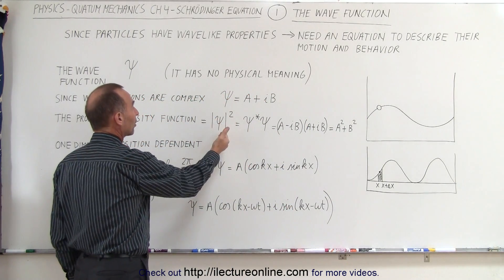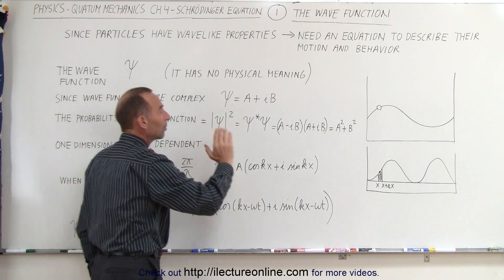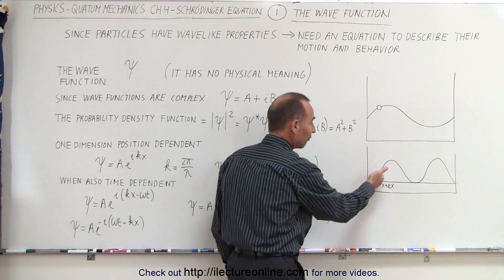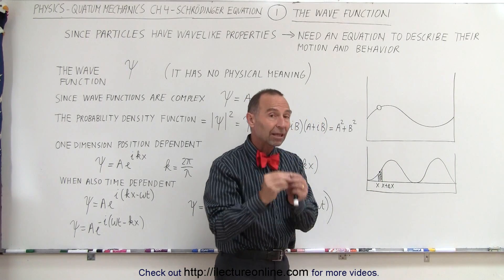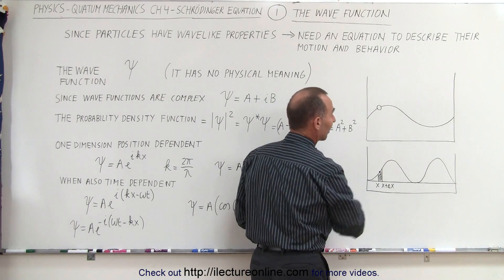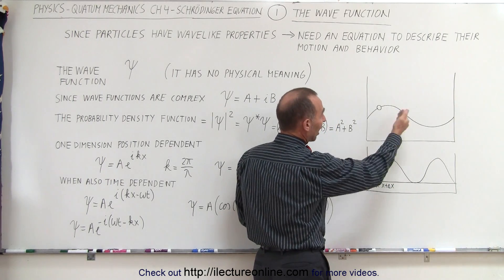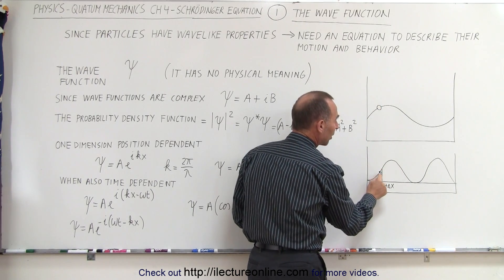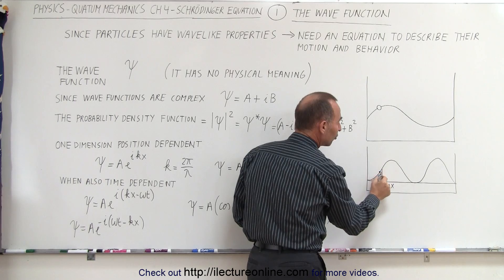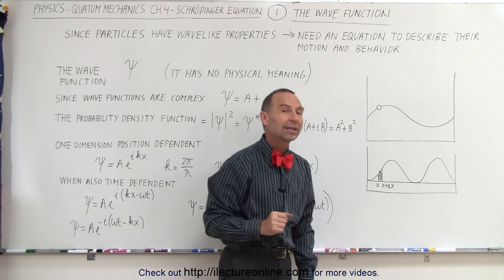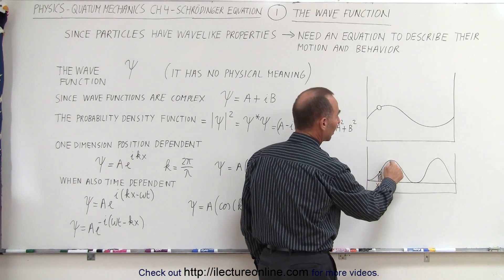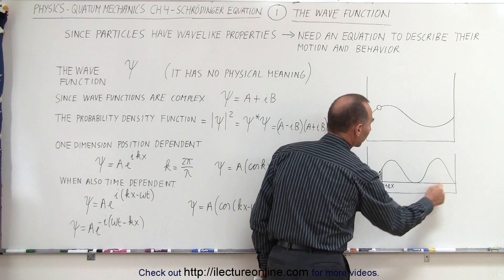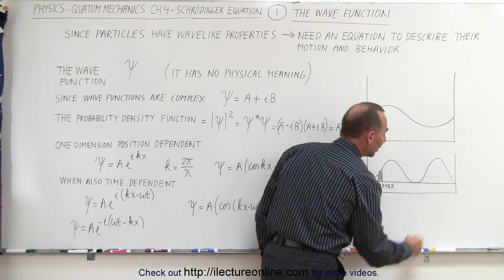We then realize that if we square the wave function, we came up with something that represents the probability of where we could potentially find the particle. The higher the probability density function, the more likely you're going to find the particle there. In this example right here, the particle is likely to be there. We can calculate what the probability is by calculating the area underneath that probability density curve. Notice it's much more likely for the particle to be here than there. And you can see that the probability of the particle being in these three locations here is near zero.